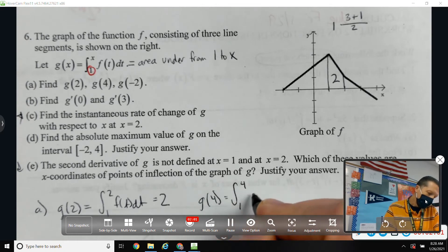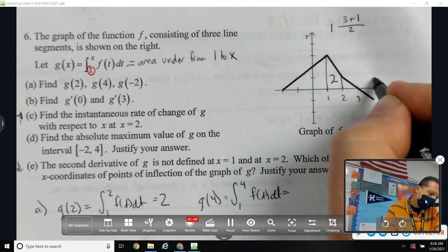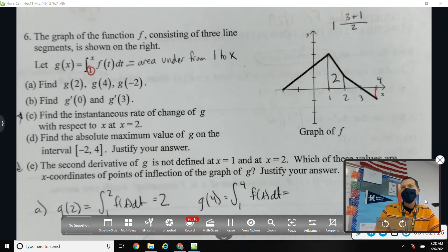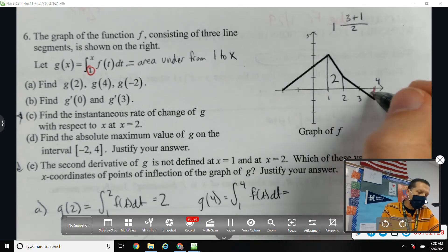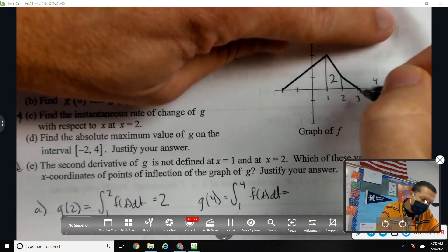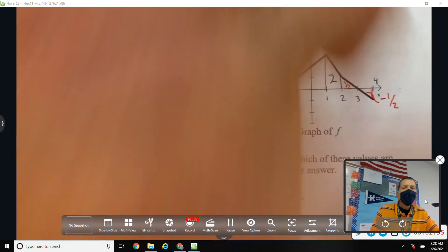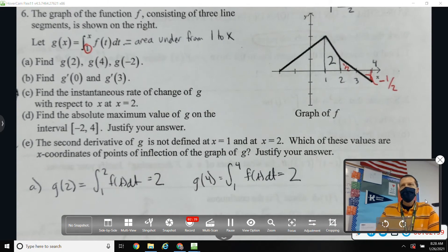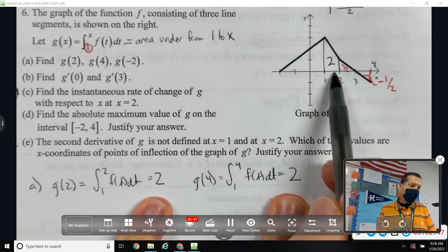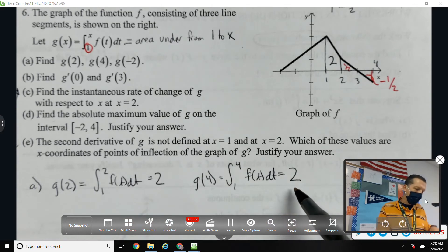So g of 4 means the area from 1 to 4. And the area from 2 to 4 total is 0, right? If I want to be kind of fancy about this, I can tell by looking that they're symmetric. And so this one's positive, this one's negative. They're both just triangles, so it's not that bad. 1 half and negative 1 half. So g of 4 is equal to 2 as well.